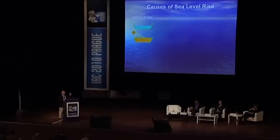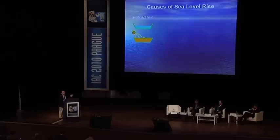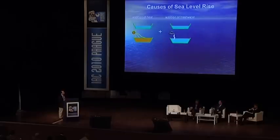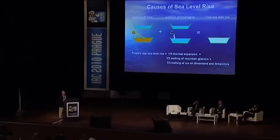For the first time, altimetry is combined with two other techniques to decipher the causes of sea level rise, which is critical for making precise projections. The first cause: adding heat to the ocean causes thermal expansion, increasing sea volume. Heat also melts glacial ice sheets and mountain glaciers, adding more water. We currently have a simple one-third rule of thumb: one-third of the 3 mm/year is thermal expansion, one-third from mountain glacier melting in Alaska, the Himalayas, and the Alps, and one-third from Greenland and Antarctica.